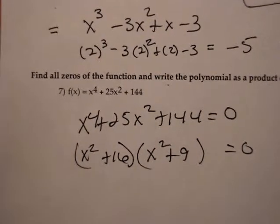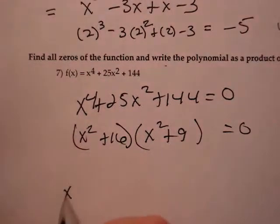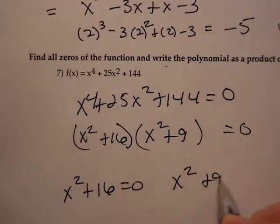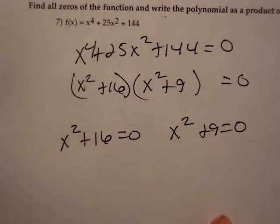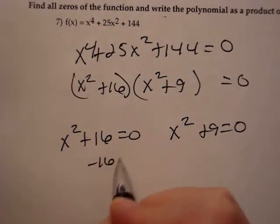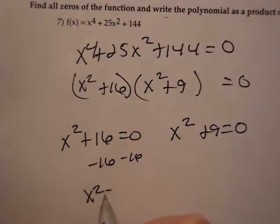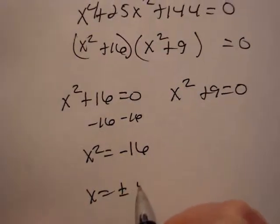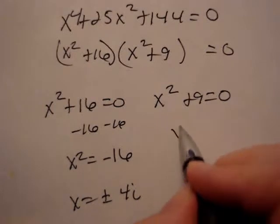Okay, now we're not comfortable factoring things that look like this yet, so we're going to set it equal to 0 at this point. x squared plus 16 equals 0, x squared plus 9 equals 0. Solve for x. Subtract 16. x squared equals negative 16. That means x is plus or minus 4i. Same thing over here.